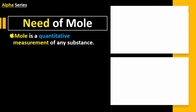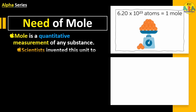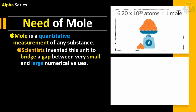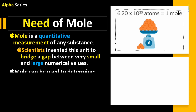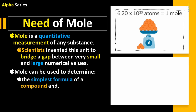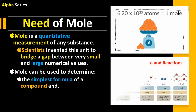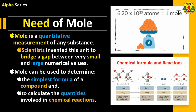Avogadro's number provides a quantitative measurement of any substance. Scientists invented this unit to bridge the gap between very small and large numerical values. The mole can be used to determine the simplest formula of a compound and to calculate the quantities involved in a chemical reaction.